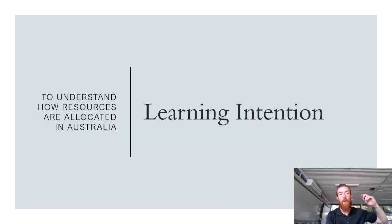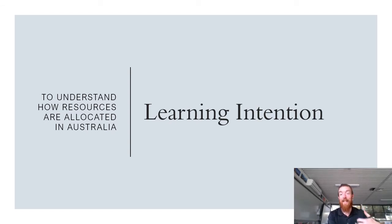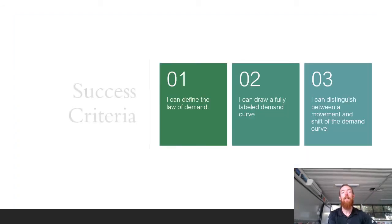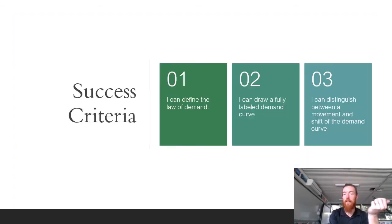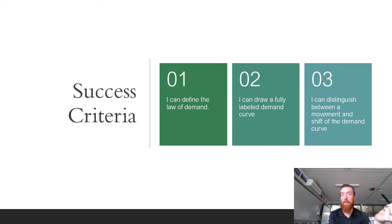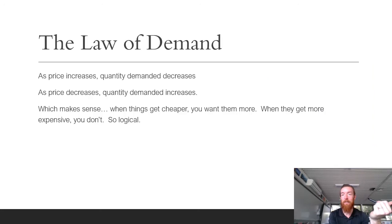The learning intention is always to understand how resources are allocated in Australia — specifically today, how consumers will allocate their resources and the things that impact that. The success criteria are: you can define the law of demand, you can draw a fully labeled demand curve, and you can distinguish between a movement and a shift in demand.